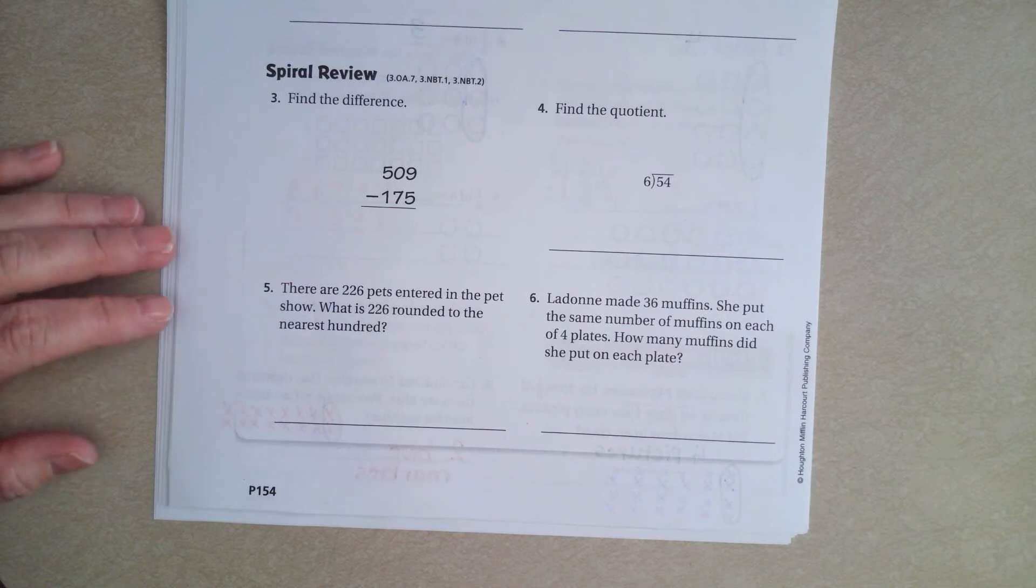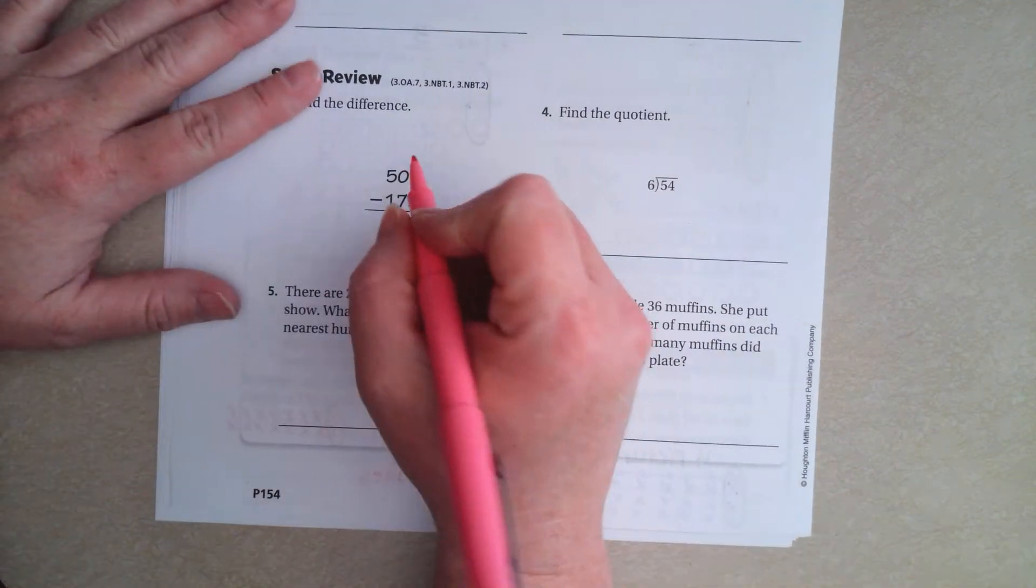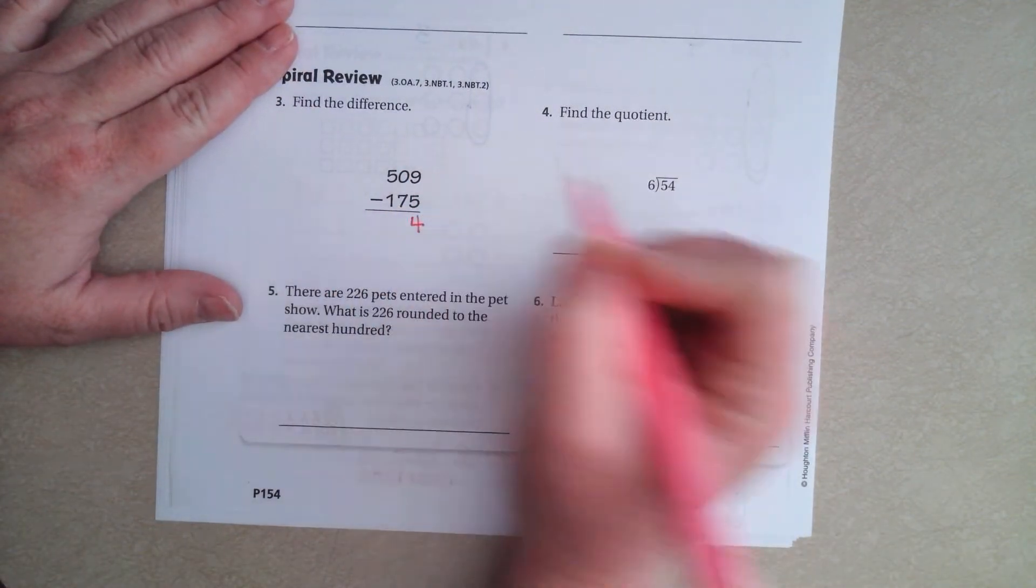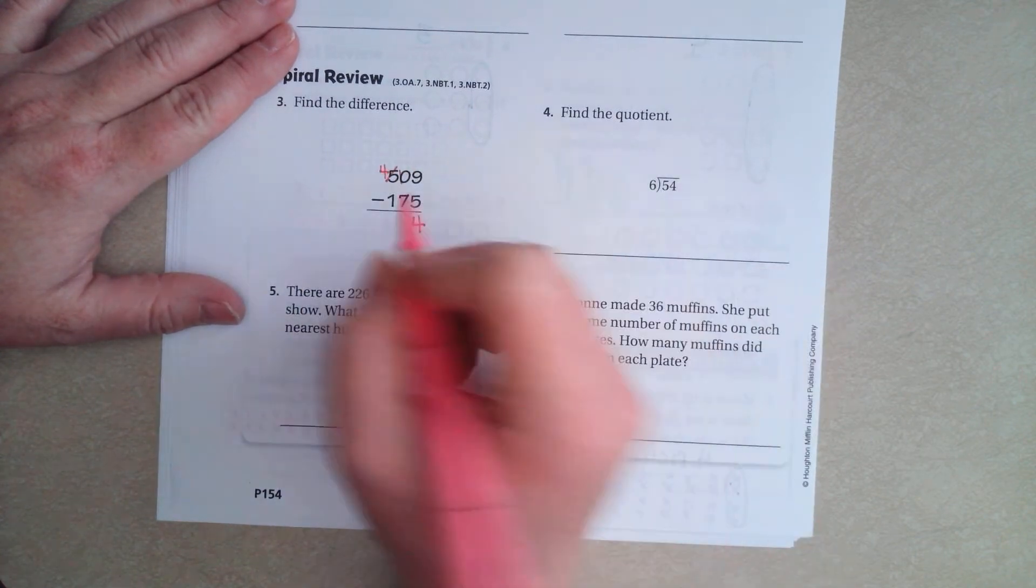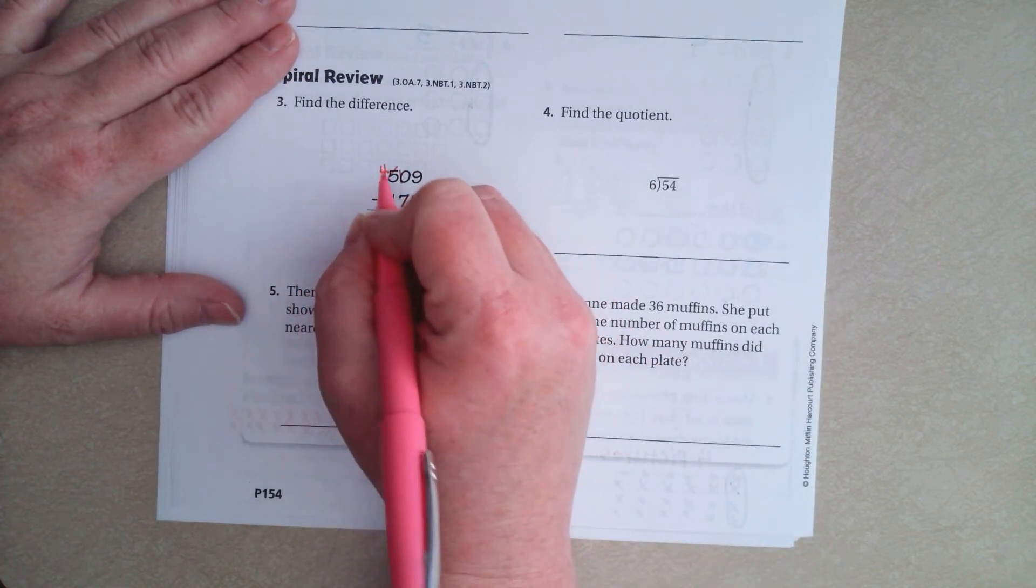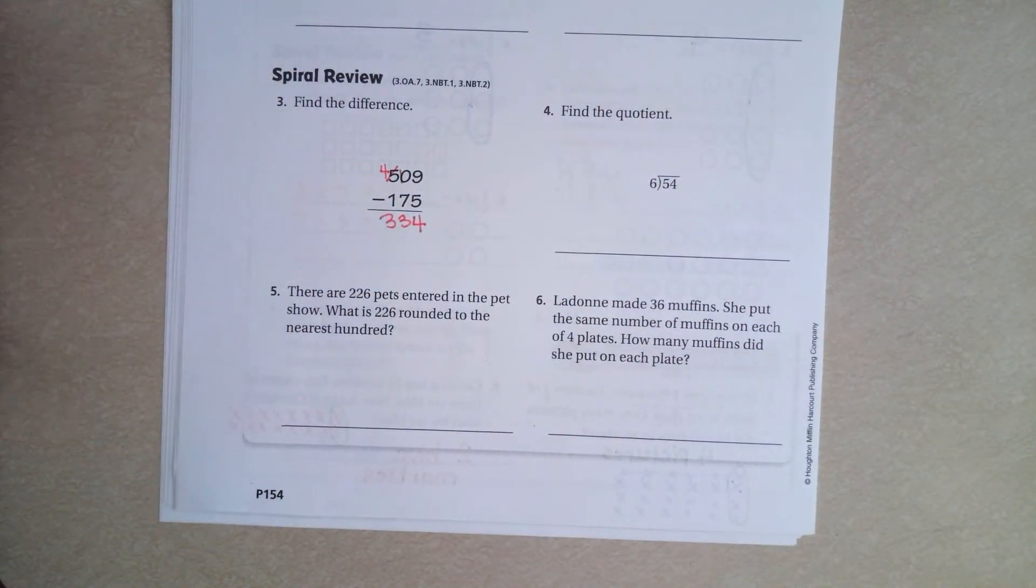We're going to find the difference. 9 minus 5 is 4. 0 can't take away 7, so I'm going to borrow 1. I'm going to make that a 10. 10 minus 7 is 3, and 4 minus 1 is 3. So 334.